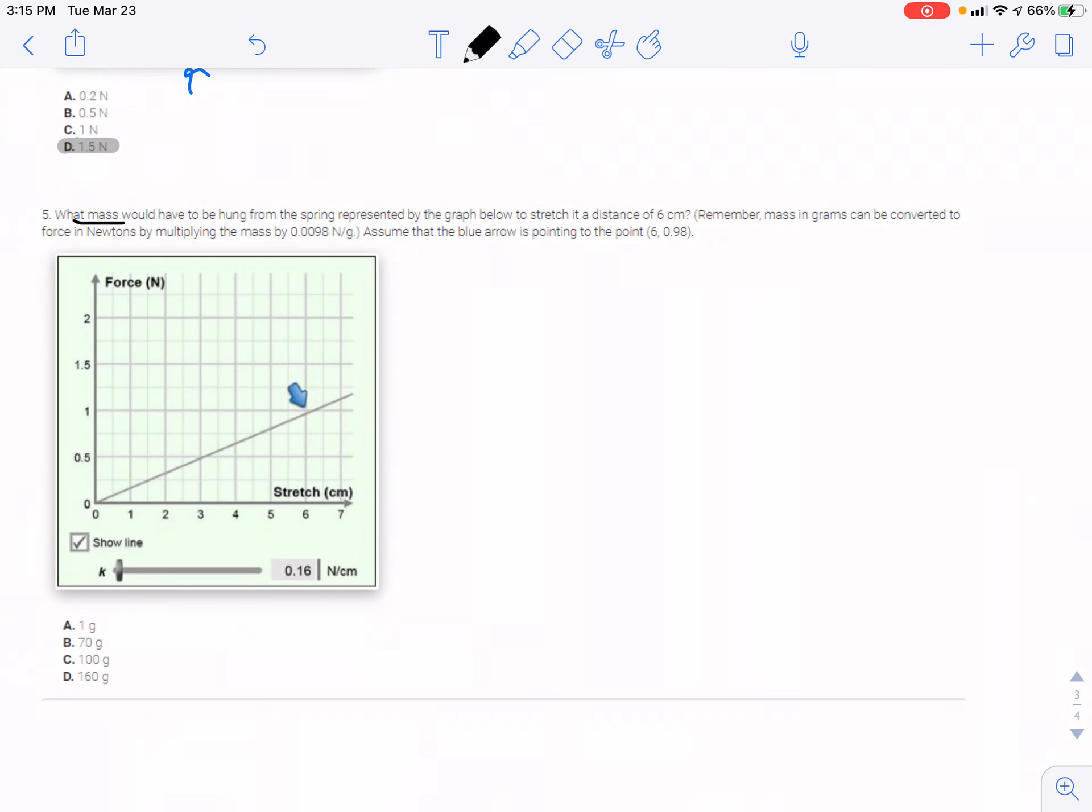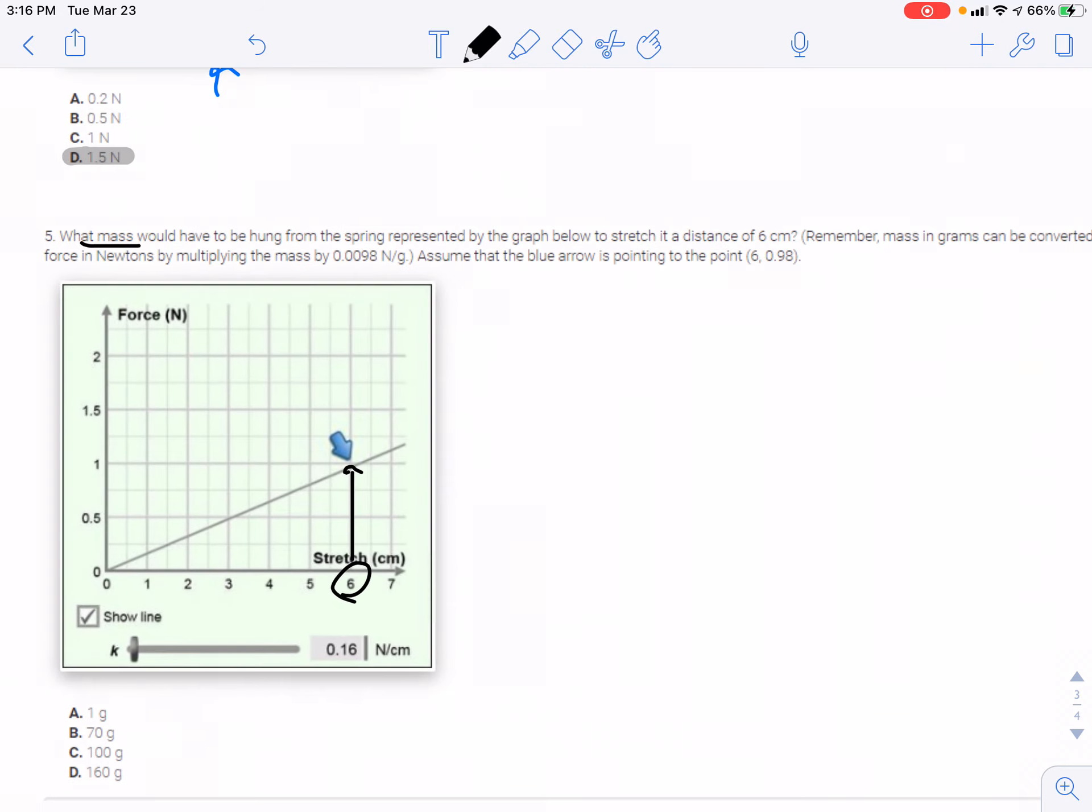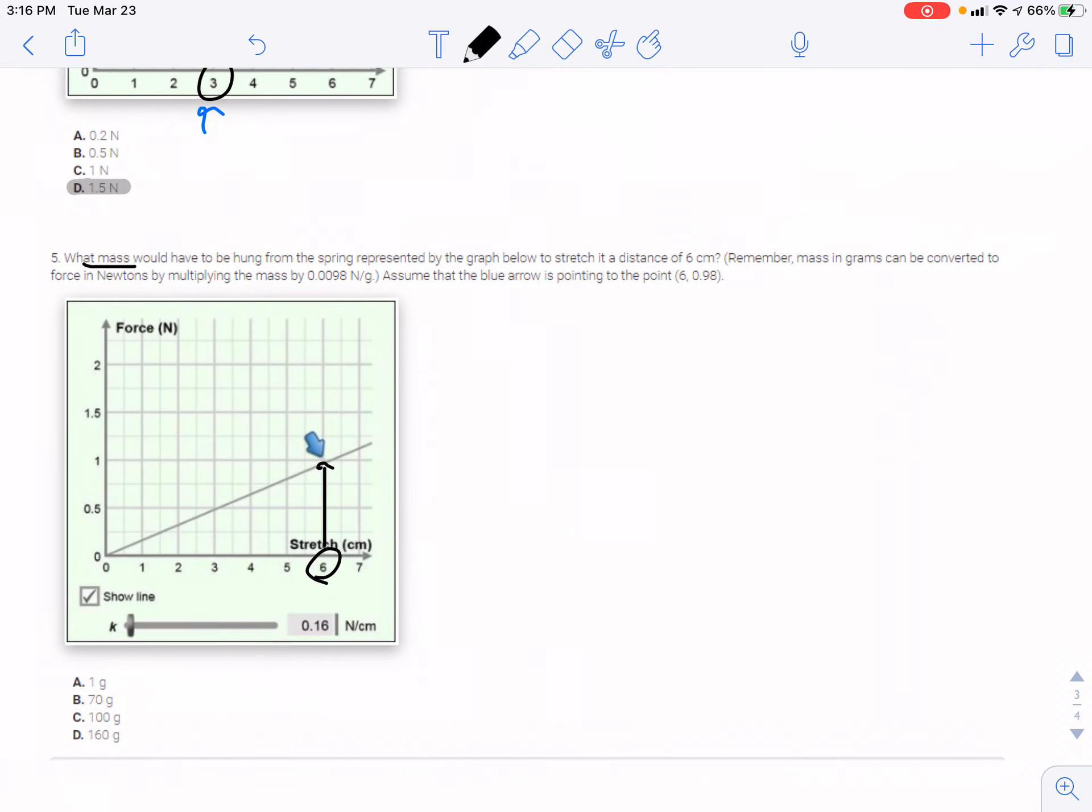It says what mass would have to be hung from a spring represented by the graph below to stretch it a distance of 6 centimeters. Well, we can see when stretched to 6 centimeters, we go up to the graph and it's almost to 1 newton, a little bit below 1 newton. If we continue reading, it says remember that mass in grams can be converted to force in newtons by multiplying by 0.0098.